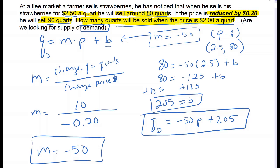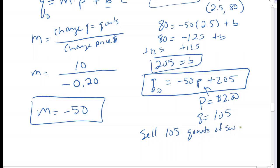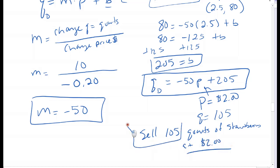I'll plug $2 into this demand equation. So the quantity demanded equals negative 50 times 2 plus 205, which is negative 100 plus 205, coming out to 105. So they will sell 105 quarts of strawberries at $2. The answer is 105.